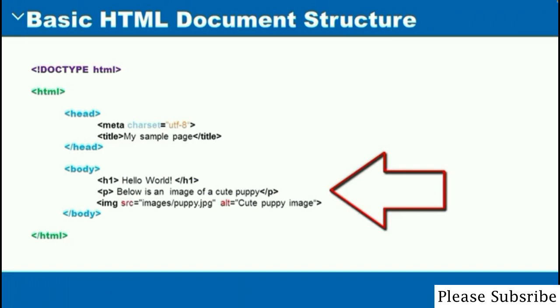Inside the IMG tag, you have to specify a couple of attributes. The first attribute is called the SRC or the source. If you're adding an image, you need to use the source attribute to specify where the image is going to be referenced from.